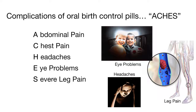Abdominal pain; chest pain or shortness of breath; headaches that are sudden, severe, and persistent, possibly caused by a CVA or increase in blood pressure; eye problems stemming from an increase in blood pressure or vascular accident; and severe leg pain caused by a thromboembolism.